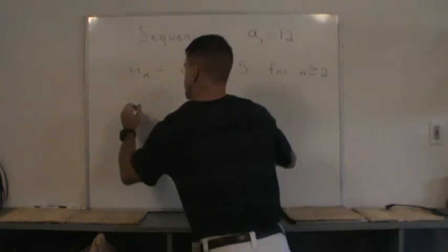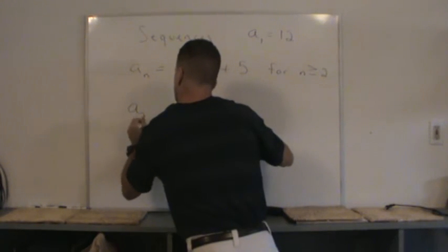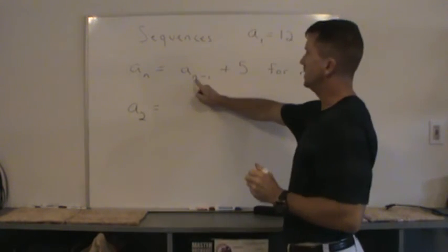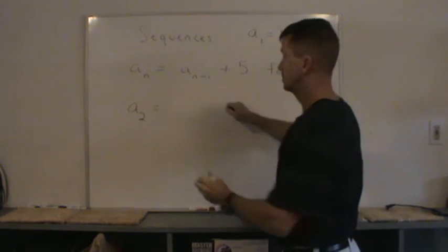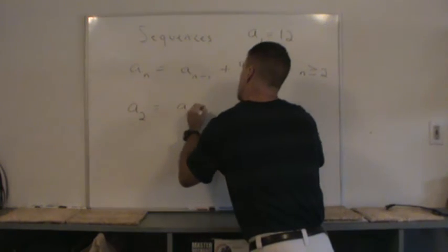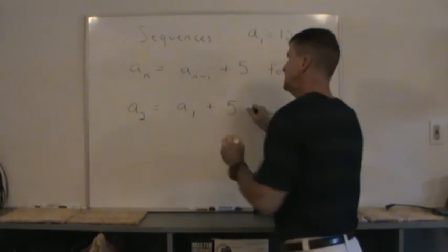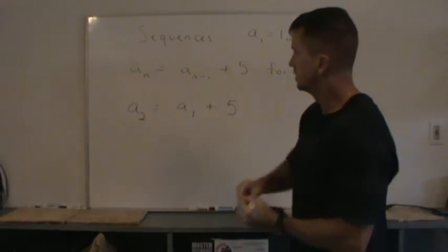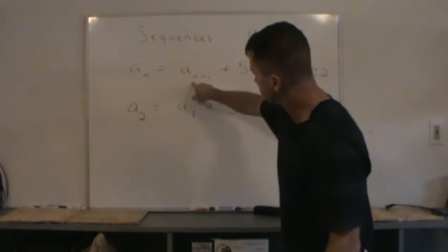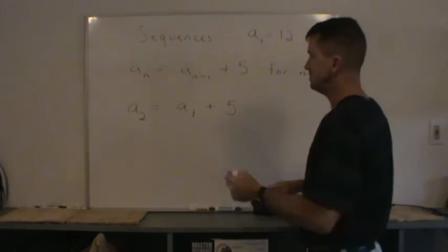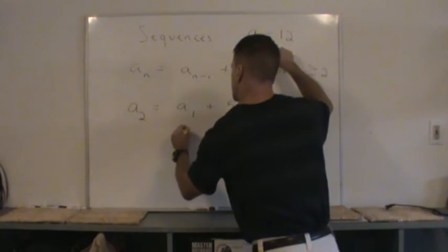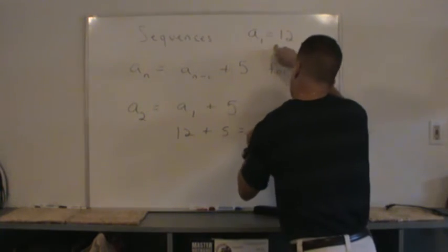Alright, to find the second term, a_2. So this is a_{n-1}, so this would be a_{2-1}, which is a_1 plus 5. An easy way to say this is your next term will be the previous term plus 5. Keep it simple. And so the first term is 12. 12 plus 5 is 17.